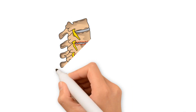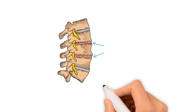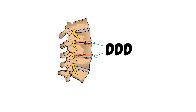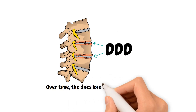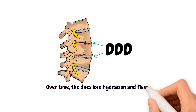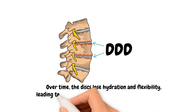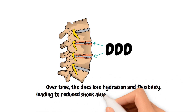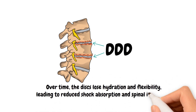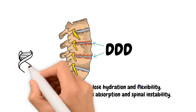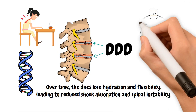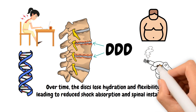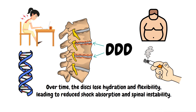DDD occurs when spinal discs wear down due to aging or injury. Over time, the discs lose hydration and flexibility, leading to reduced shock absorption and spinal instability. Factors like genetics, poor posture, obesity, and smoking also contribute to DDD.